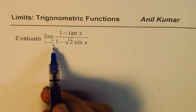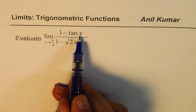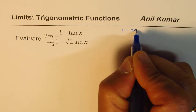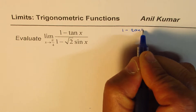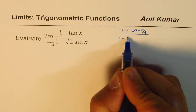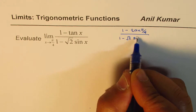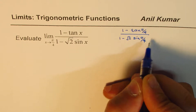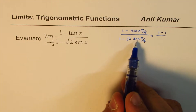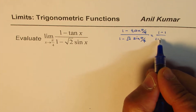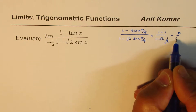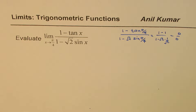If I substitute π/4 here, tan(π/4) is 1, so we get (1 - tan(π/4)) divided by (1 - √2 sin(π/4)). Since tan(π/4) is 1, we get 1 minus 1 in the numerator. And sin(π/4) is 1/√2, so we get 1/√2, which gives us 0 over 0.